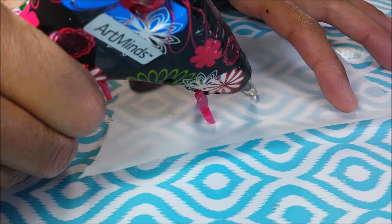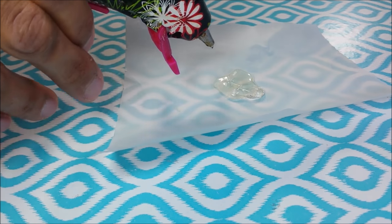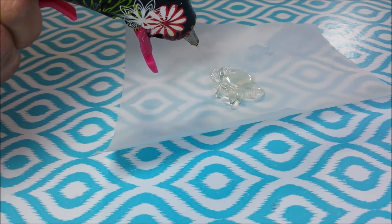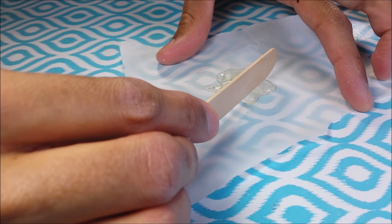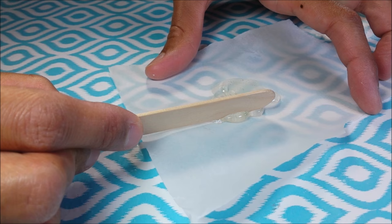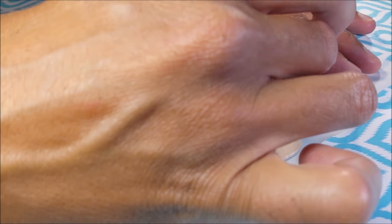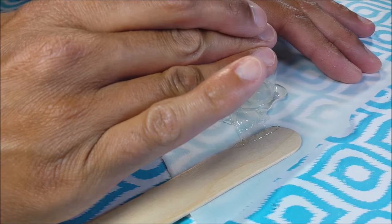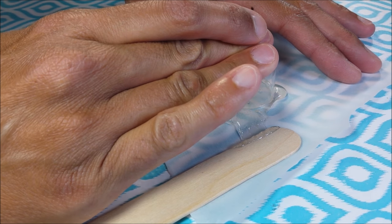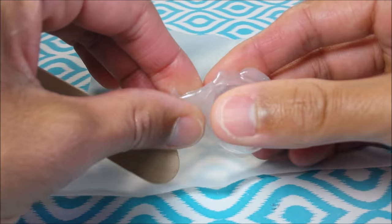Then lay out parchment paper, squirt out a ton of hot glue. I can spread it out just a little bit with my popsicle stick, and when it begins to cool down, so maybe 30 seconds.